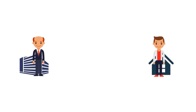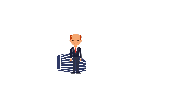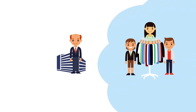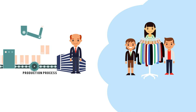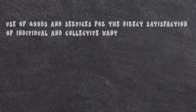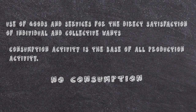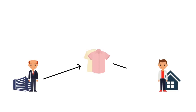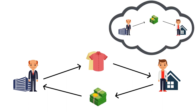The firm needs someone to consume their product and compensate them so that they can continue with the production process, and the household needs to consume the product to ensure their survival. This gives us the third phase — the consumption or disposition phase — which is concerned with the use of goods and services for the direct satisfaction of individual and collective wants. Consumption activity is the base of all production activity. The household purchases the product using the factor income earned from firms.